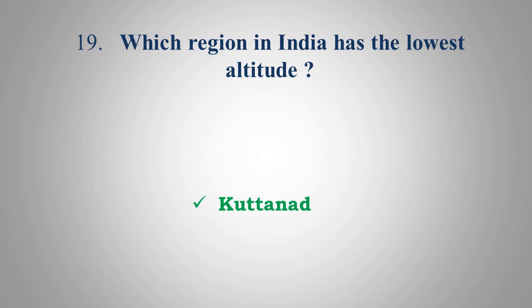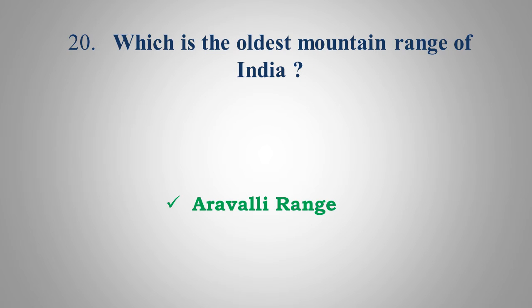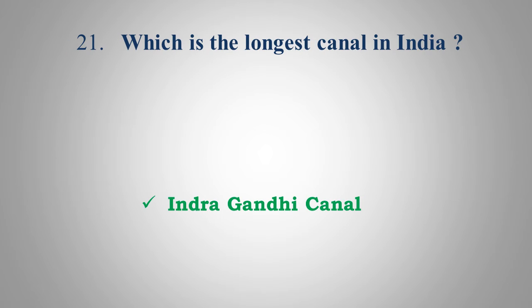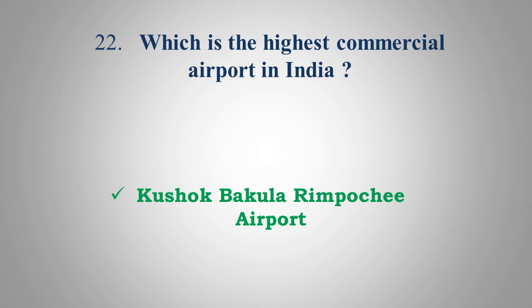Which region in India has the lowest altitude? Answer: Kuttanad. Which is the oldest mountain range of India? Answer: Aravalli Range. Which is the longest canal in India? Answer: Indira Gandhi Canal. Which is the highest commercial airport in India? Answer: Kushok Bakula Rimpochee Airport.